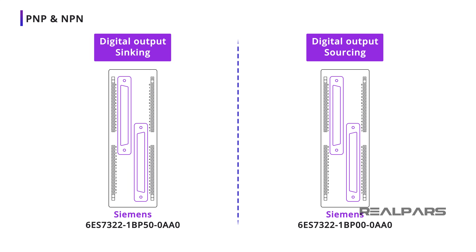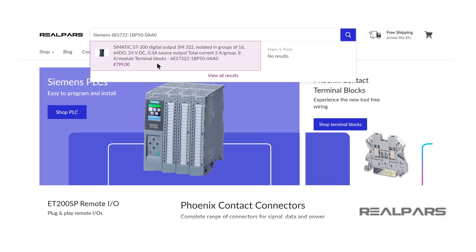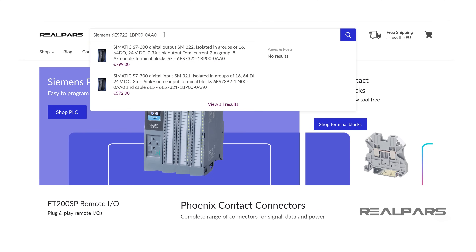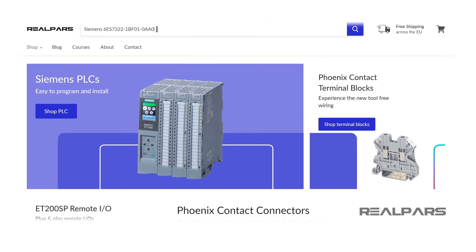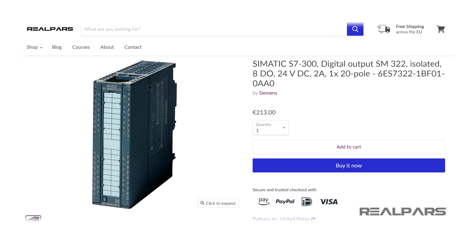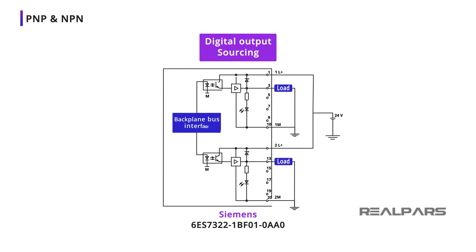For example, we have the following sinking and sourcing modules here. If you want to order these PLC modules to use in your projects, you can find the links in the video description. The Siemens 6ES7-322-1BF01-0AA0 is an 8-output transistor output module. Let's connect two of the eight outputs to loads. This output module is a sourcing module, as the current flows out of the module and into the loads. If this module is incorrectly wired as a sinking module, it will not operate.